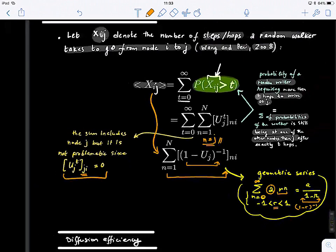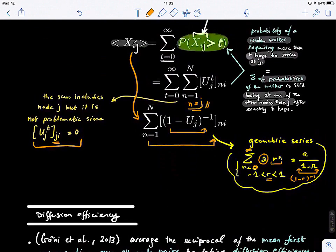Great. So now we know how to define the average number of steps and compute them based on our matrix U. And next, we reach our ultimate definition, which is the diffusion efficiency.